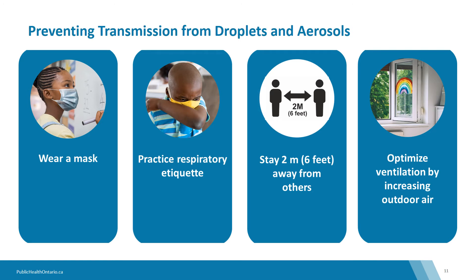COVID-19 spreads primarily by respiratory droplets and aerosols, particularly when in close proximity to an infected person. Keeping a distance of six feet or more can help reduce the risk of transmission. Other practices include good respiratory etiquette such as coughing into a sleeve, wearing a mask, and optimizing ventilation — for example, increasing outdoor air by keeping windows or doors open, which dilutes and replaces air contaminated with SARS-CoV-2 or other pollutants.